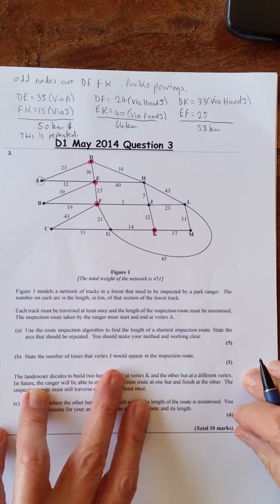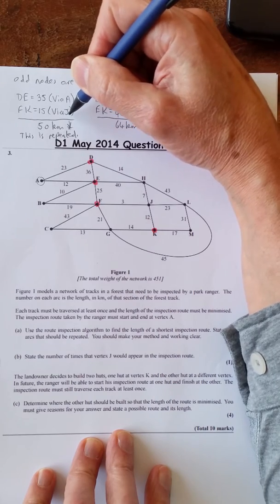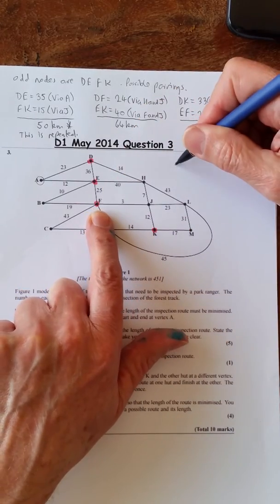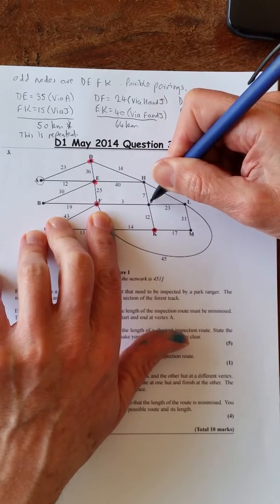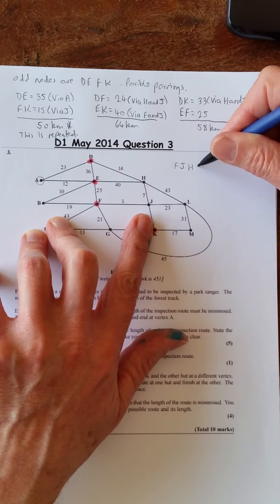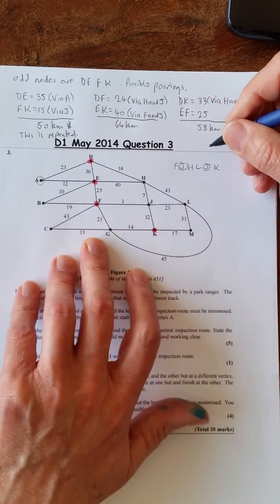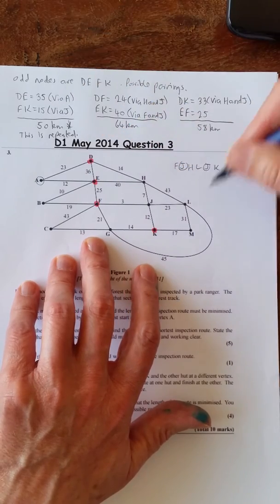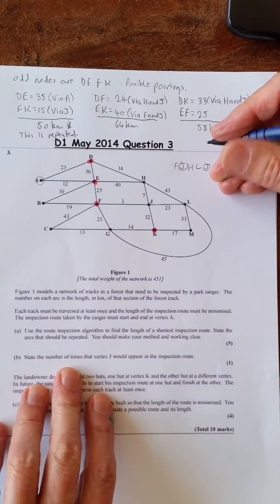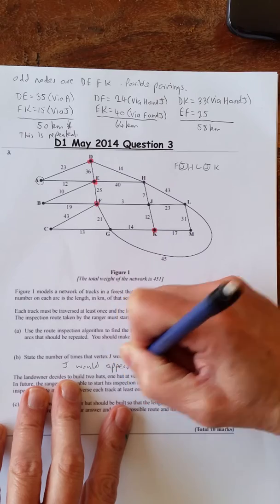State the number of times that vertex J should appear in the inspection route. Now, if you look at this here, it says via J. So we know that J is repeated. So if you look at the arcs here, let's just take this for example. If we start at F and come in, so you'd have F, J, that's coming in there, and come out. So that would be H, then L, and then back to J, and then K. So you can see J is repeated twice there. But it says that J is repeated also, so that's going to be visited one more time. So that means it's going to be three times. There's only one mark for that. So you'd say J would appear three times.